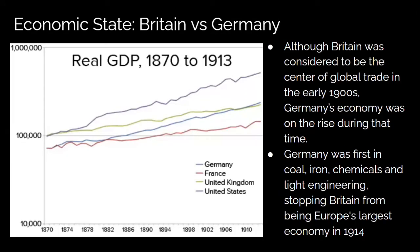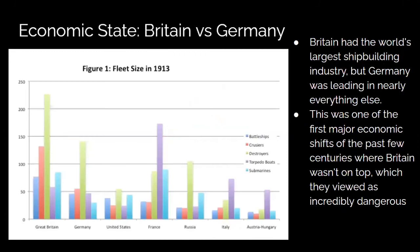This graph shows the GDP of Britain, Germany, and a couple of other countries. Germany is in blue and the United Kingdom in green. You can see that towards the end, around 1906, Germany surpasses the United Kingdom very slightly. Although Britain was considered the center of global trade in the early 1900s, Germany's economy was on the rise — first in coal, iron, chemicals, light engineering, and more — which was stopping Britain from being Europe's largest economy. Britain had the world's largest shipbuilding industry, surpassing Germany there, but Germany was leading in everything else. This was the first major economic shift for Britain in past centuries, so they viewed Germany as a main economic threat.